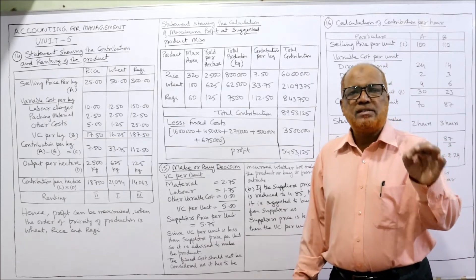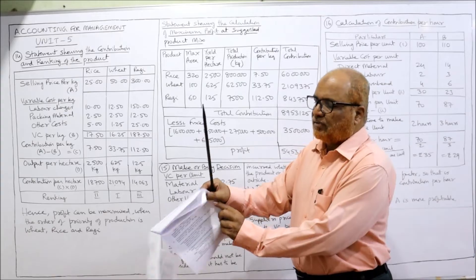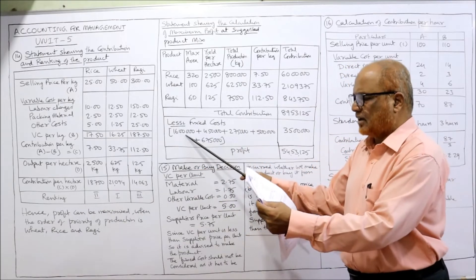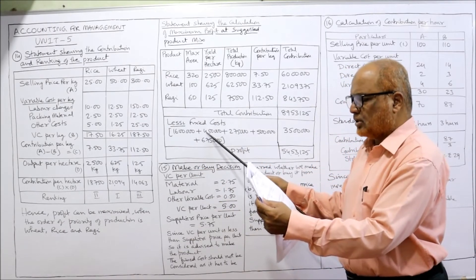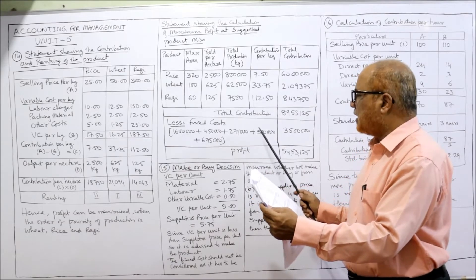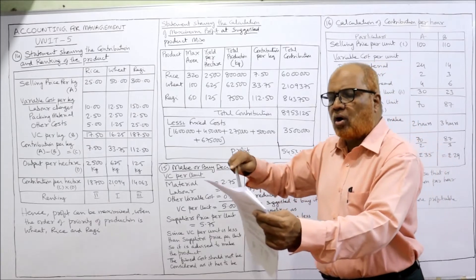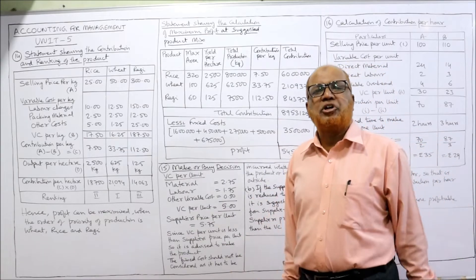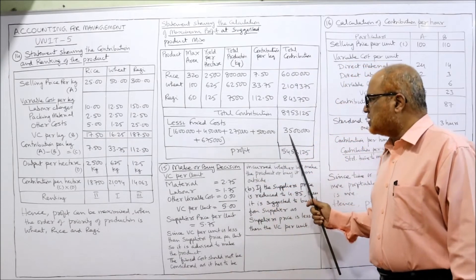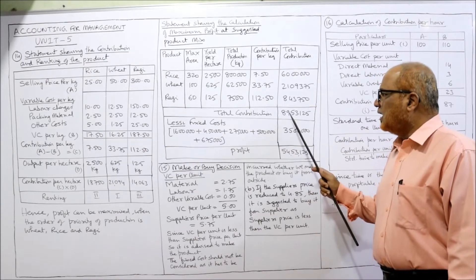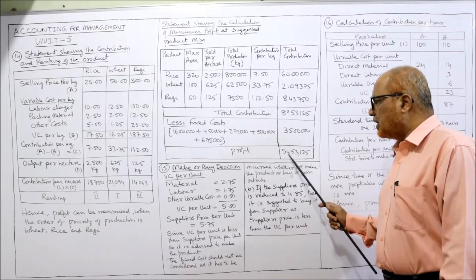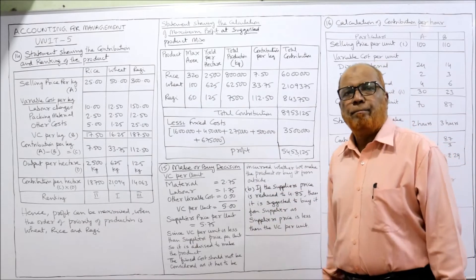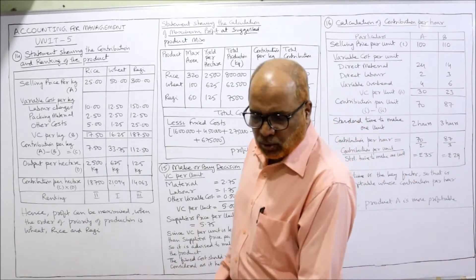Total contribution from all three products = ₹89,53,125. From this we subtract the fixed cost. Fixed costs per annum: cultivation and growing cost ₹16 lakh, administrative cost ₹4,50,000, land revenue ₹2,75,000, repairs and maintenance ₹5 lakh, other cost ₹6,75,000 — total fixed cost = ₹35 lakh. Profit = ₹89,53,125 − ₹35,00,000 = ₹54,53,125. This is the profit from the recommended product mix.